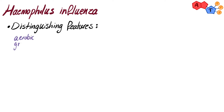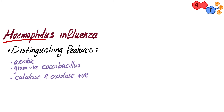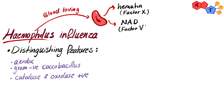Haemophilus influenzae is an aerobic gram-negative coccobacilli. It's catalase and oxidase positive, and the name Haemophilus literally means blood loving. This is because it requires hematin, or factor X, and NAD — nicotinamide adenine dinucleotide — also known as factor V. Both of these are found in RBCs, and it requires both to grow.